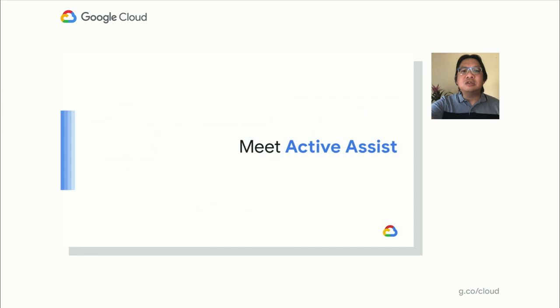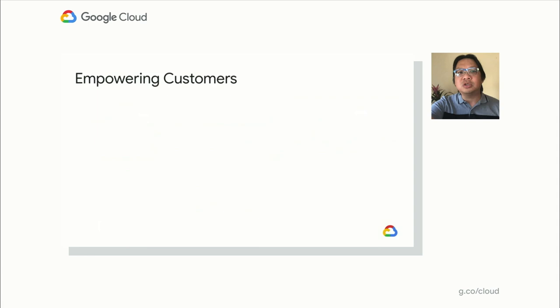We're excited to introduce you to Active Assist, here to actively assist you. It's a new solution that brings together an array of intelligent features which all have a common goal: to make it easier for you to optimize your cloud while reducing manual effort. We asked ourselves, what could we do to empower customers with better intelligence and automation? And after speaking with many of you, we heard three answers loud and clear.